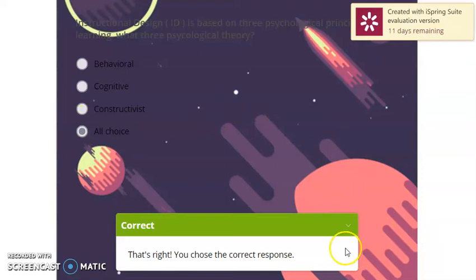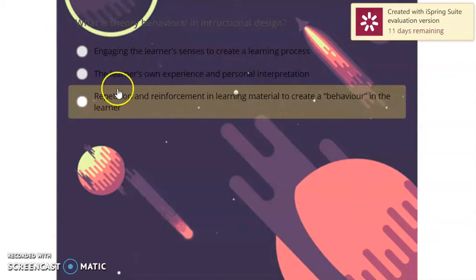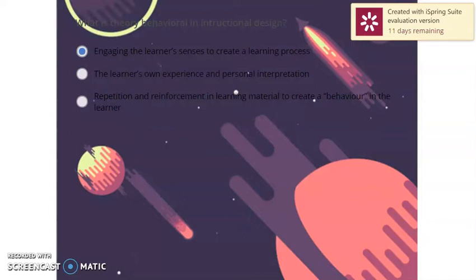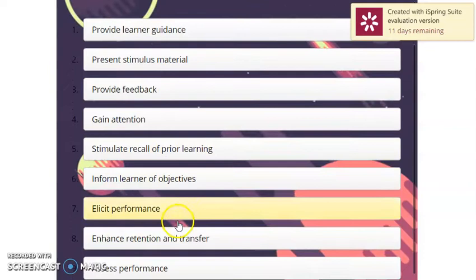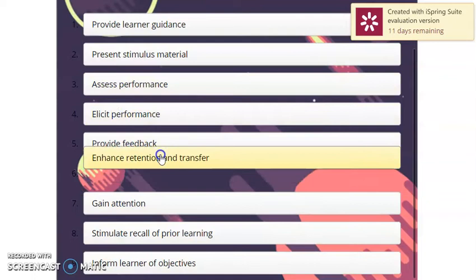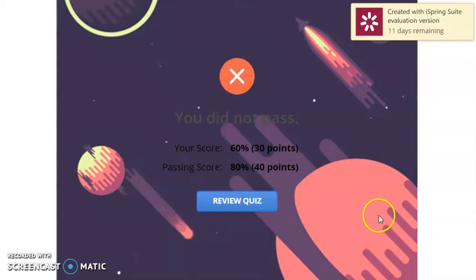Next. What is the theory of behavioral? It's incorrect. It's wrong. So this is your score and the passing score. You did pass the test. So just now is the example of quiz.